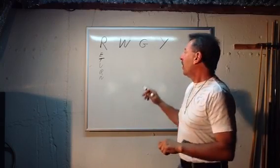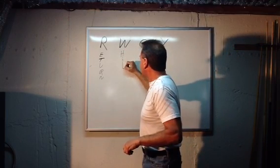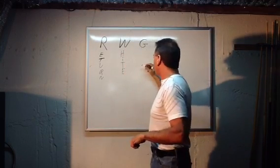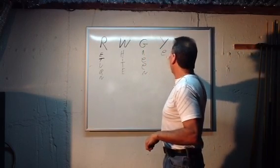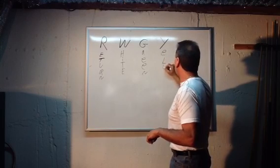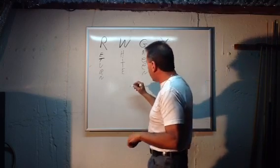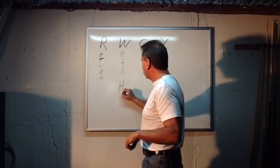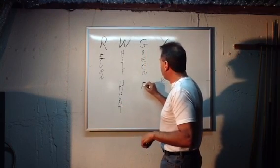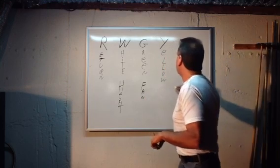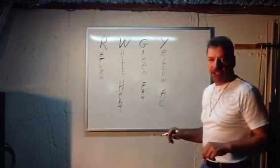The W stands for white, G stands for green, and Y stands for yellow. The white is heat, the green is your system fan, and the yellow is normally your air conditioning, central air conditioning, or AC, if there's an A-coil in a hot air furnace.